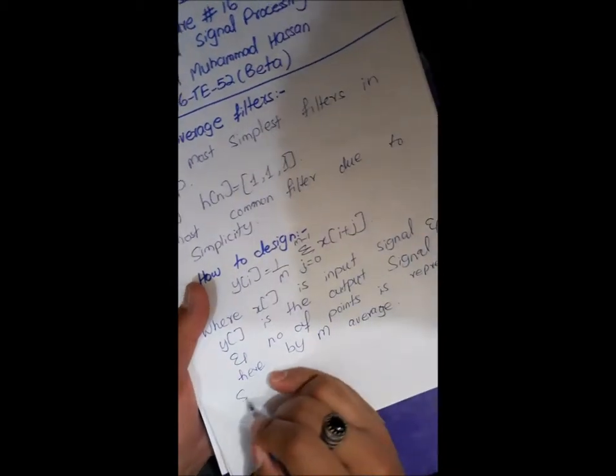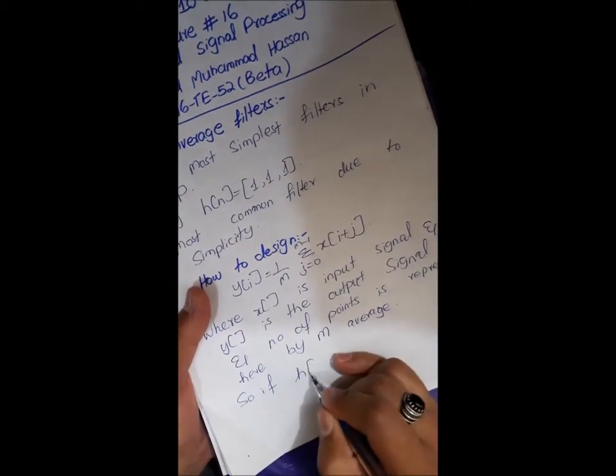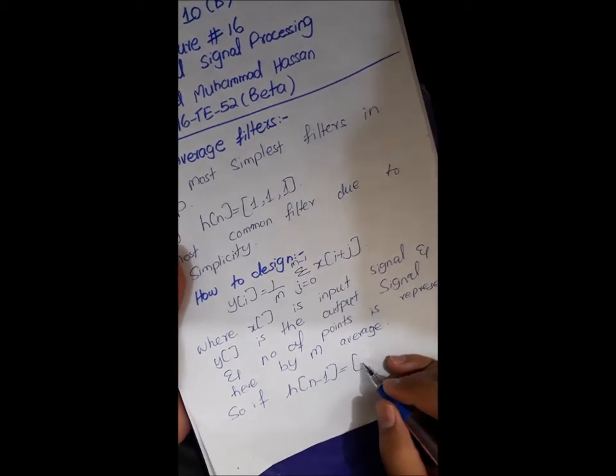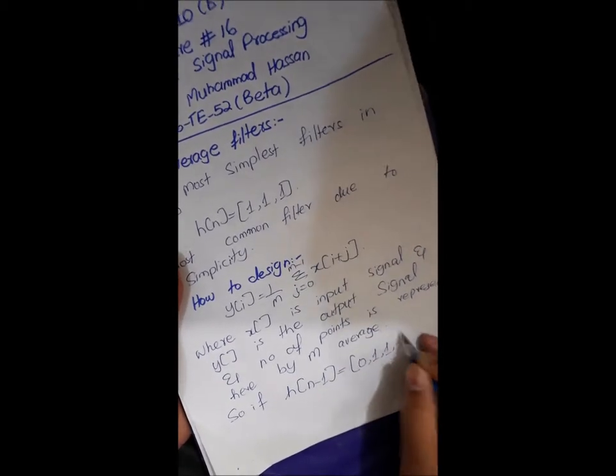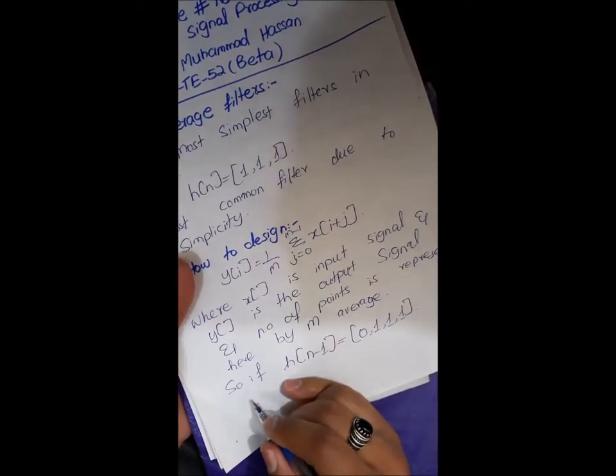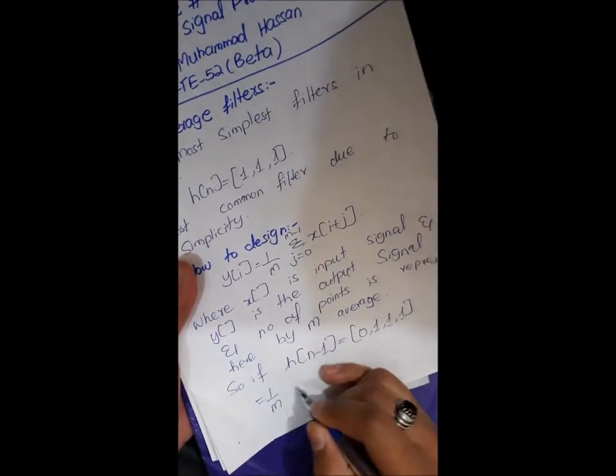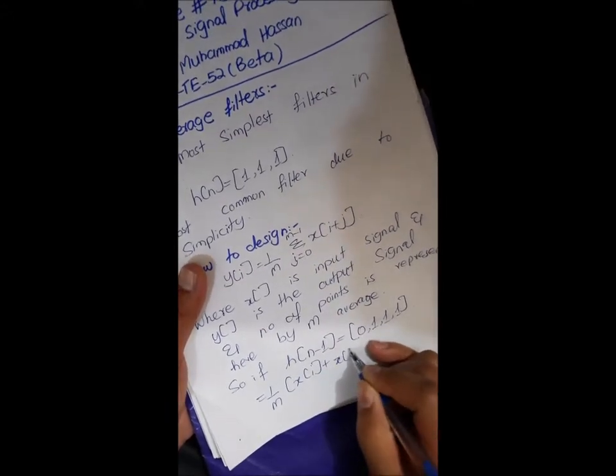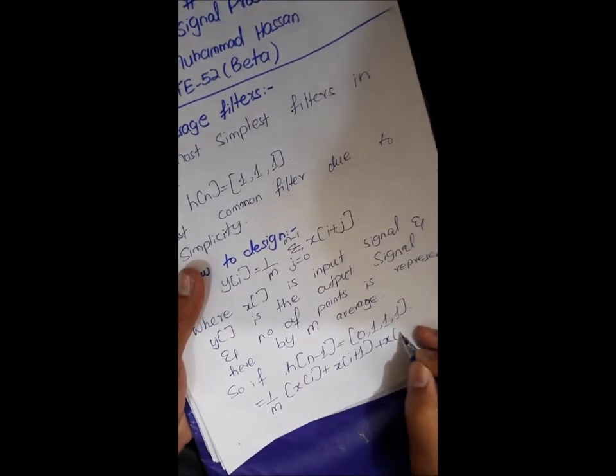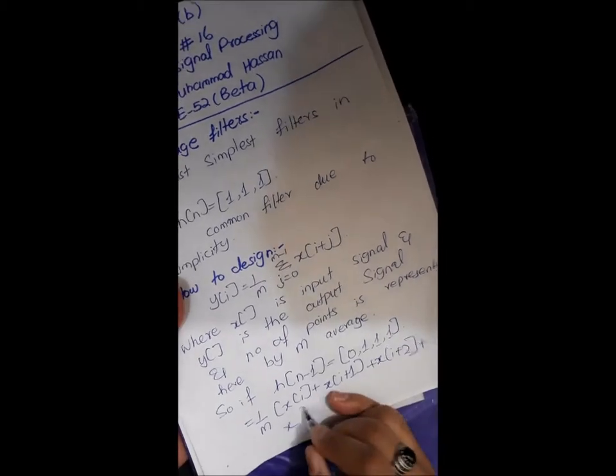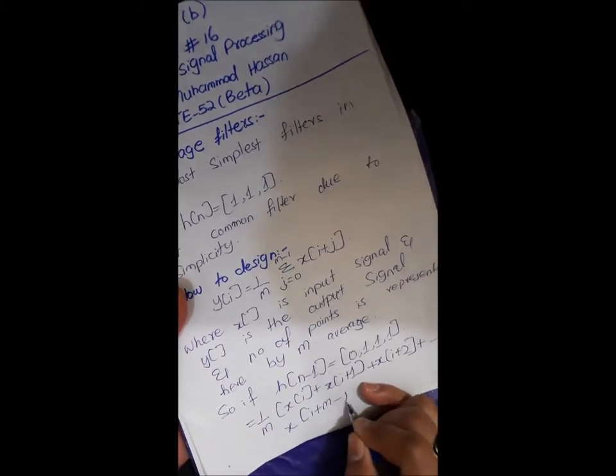Where x is the input signal and y is the output signal and m is the number of points. So if we apply a condition in which there is a decrease in n, so original h of n will be looking like this. So from this formula if we see that it will affect it like this.